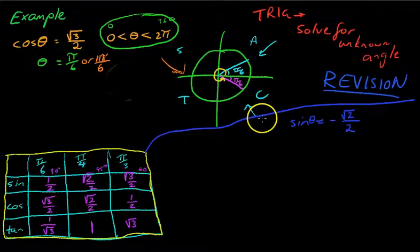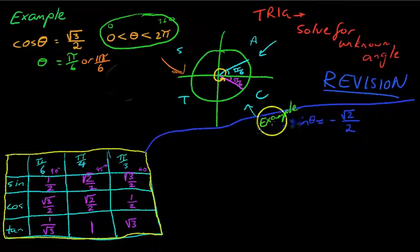So one more example before we go on with this. This is really something you're going to have to practice a lot. Remember, it is something you learnt in grade 11. Here's our example. Sin θ equals negative root 2 on 2. The only difference here is sin instead of cos and this negative, which is probably the more important bit. All the rules still apply though.